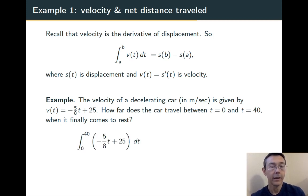So, in order to get that net distance traveled, we're going to integrate that rate of change of distance, namely velocity. So, we integrate from 0 to 40 v of t, dt.